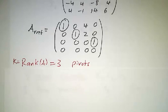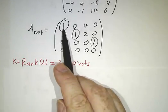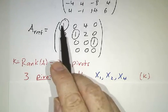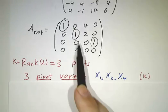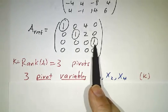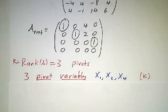Now associated to each pivot is called a pivot variable. This is in the first column, so we say x1 is a pivot variable, because it's 1x1 plus stuff. This is in the second column, so x2 is a pivot variable. In the fourth column, x4 is a pivot variable. So we have three pivot variables, x1, x2, and x4.